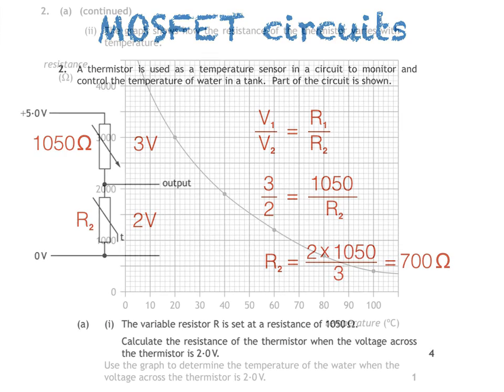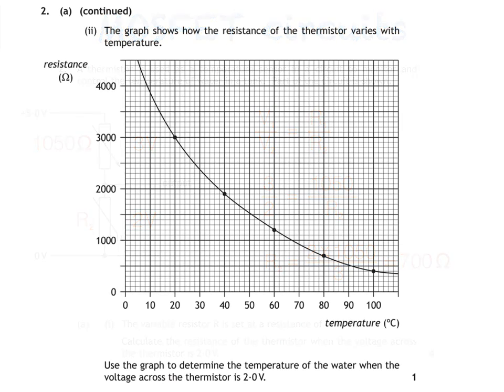Part A part 2 contains a graph showing how the resistance of the thermistor varies with temperature. We're asked to determine the temperature of the water when the voltage across the thermistor is 2 volts. All we have to do is find our answer from the previous question — 700 ohms — on the y-axis, then draw across until we meet the line, and then down, so the temperature of the water is 80 degrees Celsius.